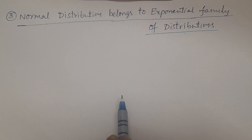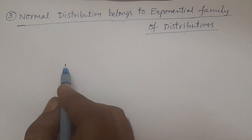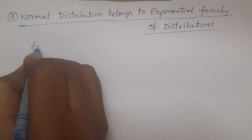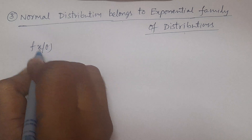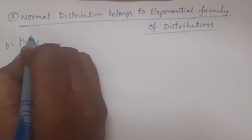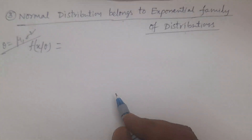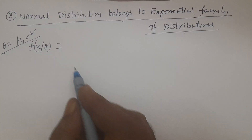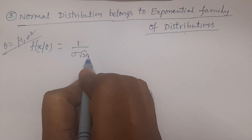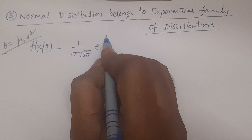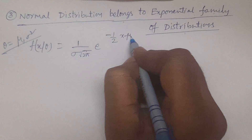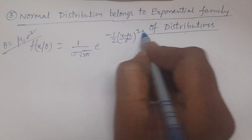The normal distribution probability density function: first I consider f(x, θ), where θ here is (μ, σ²) — two parameters. It is 1 by σ√(2π) times e to the power of minus 1/2 times ((x − μ)/σ) squared. This is the function.